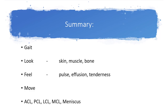In summary: start with gait, then make the patient lie down. Do the look component — skin, muscle, and bone. Feel for neurovascular status, then effusion, then tenderness. Move: perform a straight leg raise and assess full extension to full flexion. Then do your special tests for the ACL, PCL, LCL, MCL, and meniscus. Thank you.